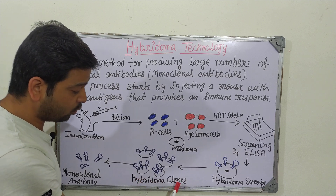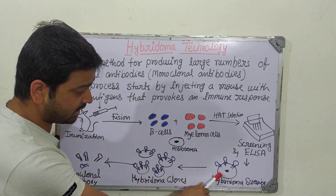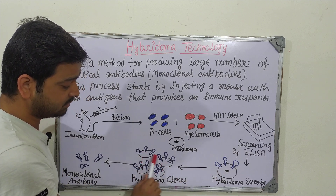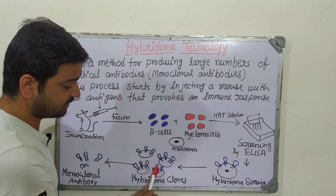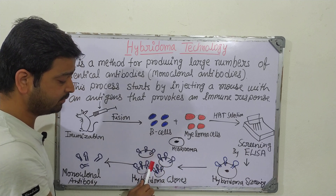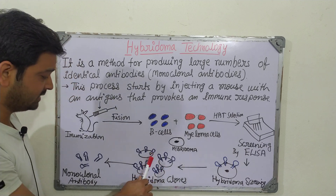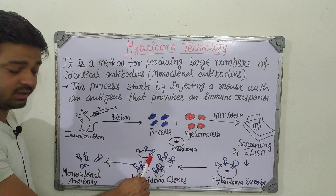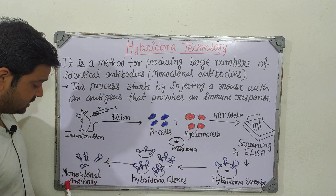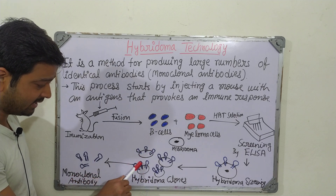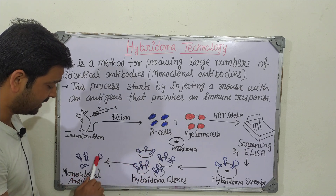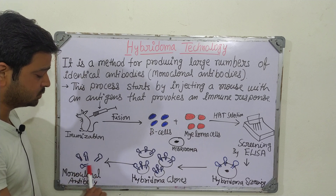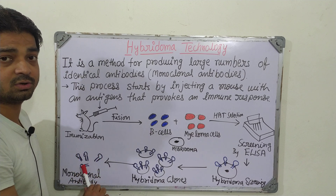Different types of hybridoma clones are prepared. As you can see, so many clones have been prepared, and the ones having the particular antibody we are expecting are isolated. These are the monoclonal antibodies, which are useful for the particular disease or disorder for which they were prepared.